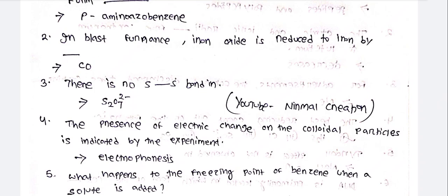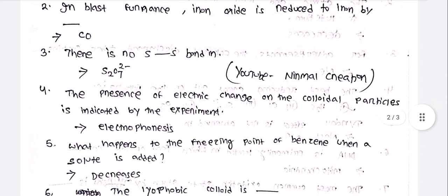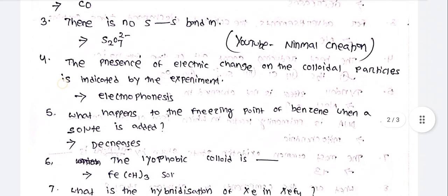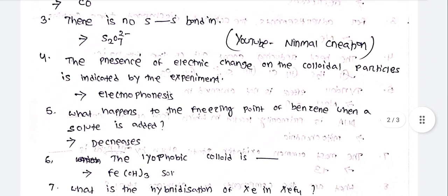In the blast furnace, iron oxide is reduced to iron by CO gas. There is no S-S bond in S2O7²⁻. The presence of electric charge on colloidal particles is indicated by the electrophoresis experiment.